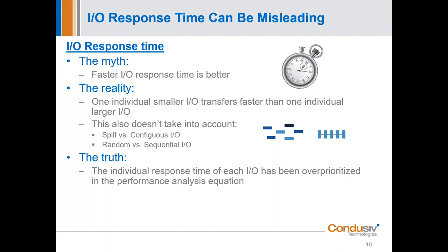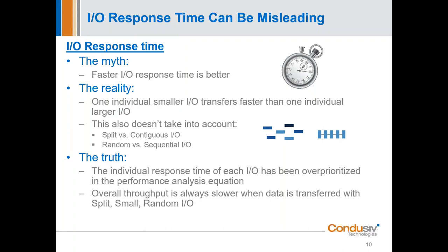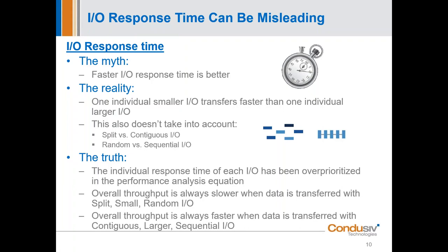The truth of the matter is that the individual response time of each IO is really over-prioritized when analyzing throughput. Having flash is wonderful, but it has been over-prioritized because of this missing understanding of the nature of the IO. Overall throughput is always going to be slower when data is transferred with small split random IO, and always faster with contiguous larger sequential IO. We're going to get into how Velocity transforms IO at the source within the Windows operating system to get contiguous larger sequential IO, giving you 30–40% faster throughput — also lowering CPU utilization and resource consumption.